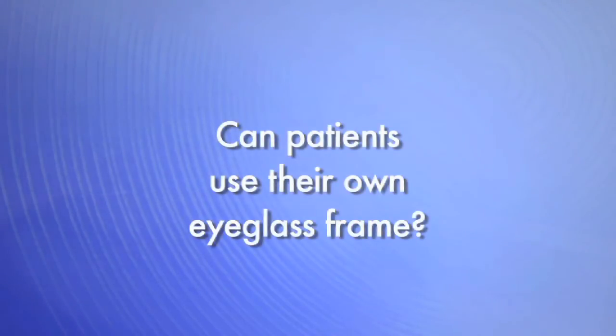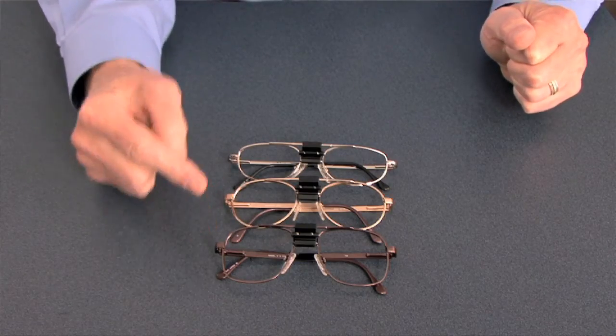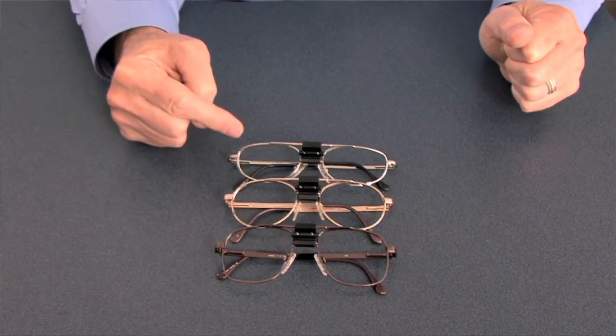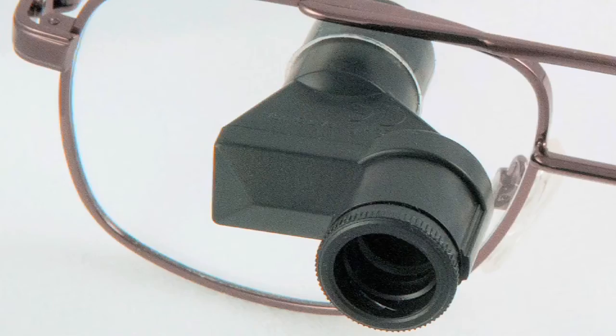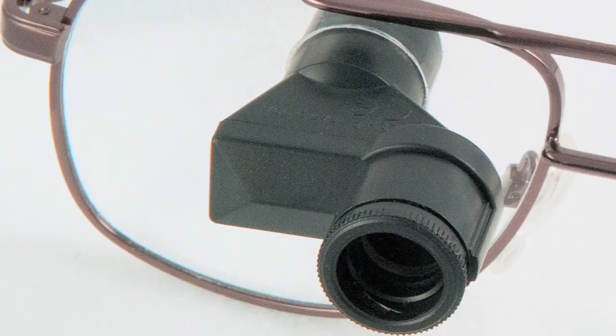Patients occasionally ask whether they can use their own eyeglass frame and have the telescope mounted to it. For the VES-K, VES-Sport, and VES-2, you are required to use Ocutec's frames because they are designed to take the mounting built into the telescope. For the VES-Mini, many frames can be used. We recommend that they be metal or plastic with adjustable nose pads and be sturdy in design, and suggest you avoid rimless designs.